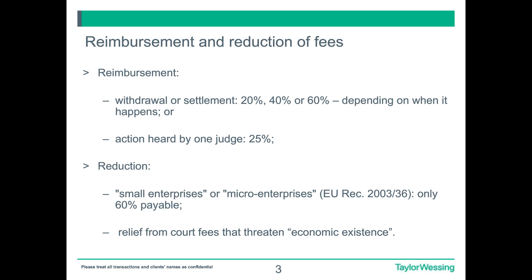There is also a possibility of fee reduction from the outset of the action, which particularly relates to small enterprises. Fee reduction allows only 60% of the total fees due to be paid by small enterprises or so-called micro-enterprises, as defined by criteria in European Commission Recommendation 2003/361 of May 6, 2003. A party wanting to benefit from either status must affirm it fulfills these criteria in its statement of claim, counterclaim, or other relevant application when lodged with the registry. Furthermore, parties may also apply to the court for relief from court fees if the amount threatens their economic existence.